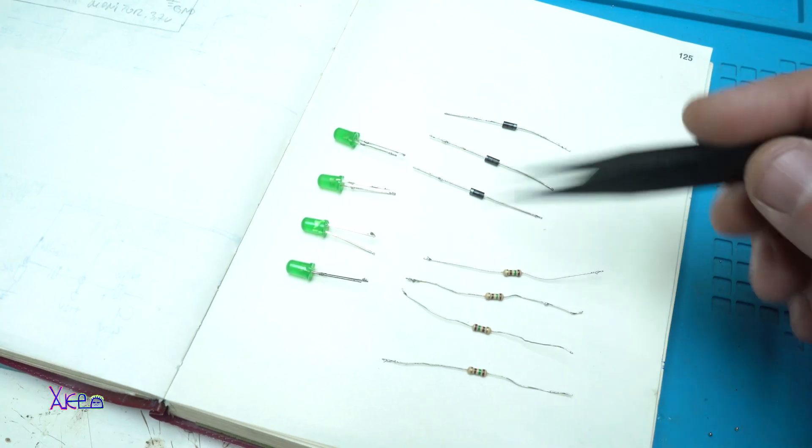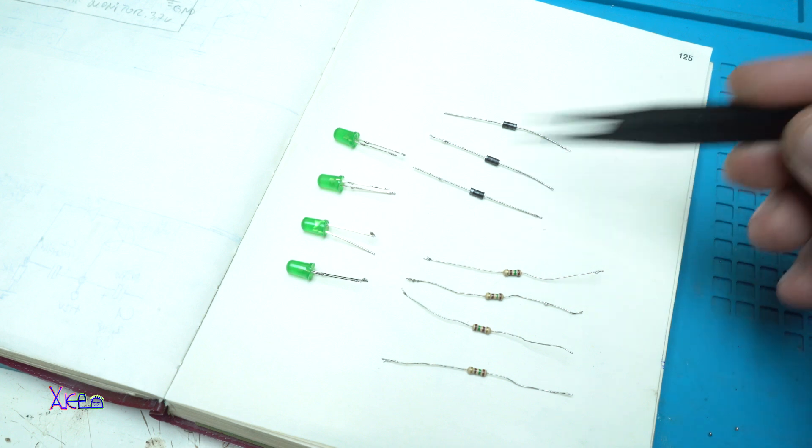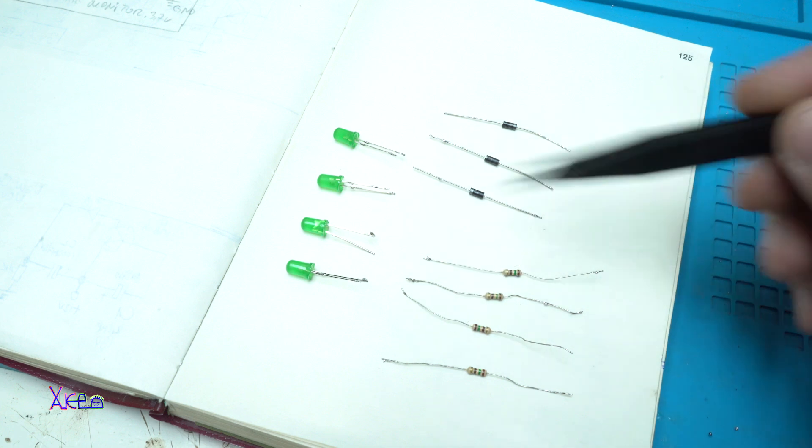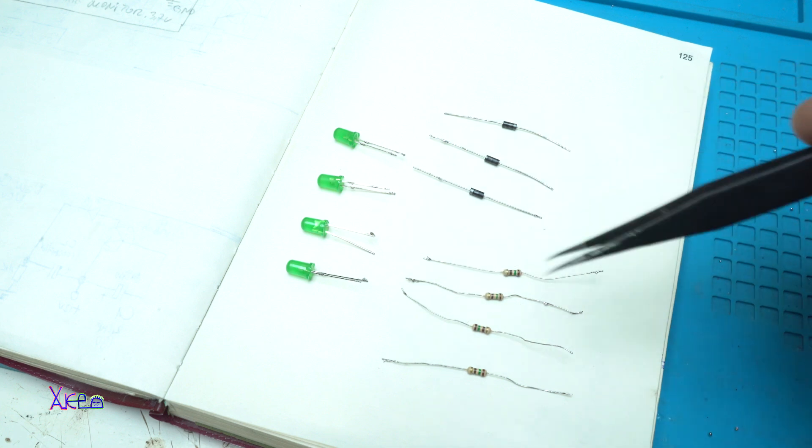Here are the electronic components as I said: three diodes, four resistors, and four green LEDs, totally 11 electronic components to make this voltage monitor for lithium batteries 3.7 volts.